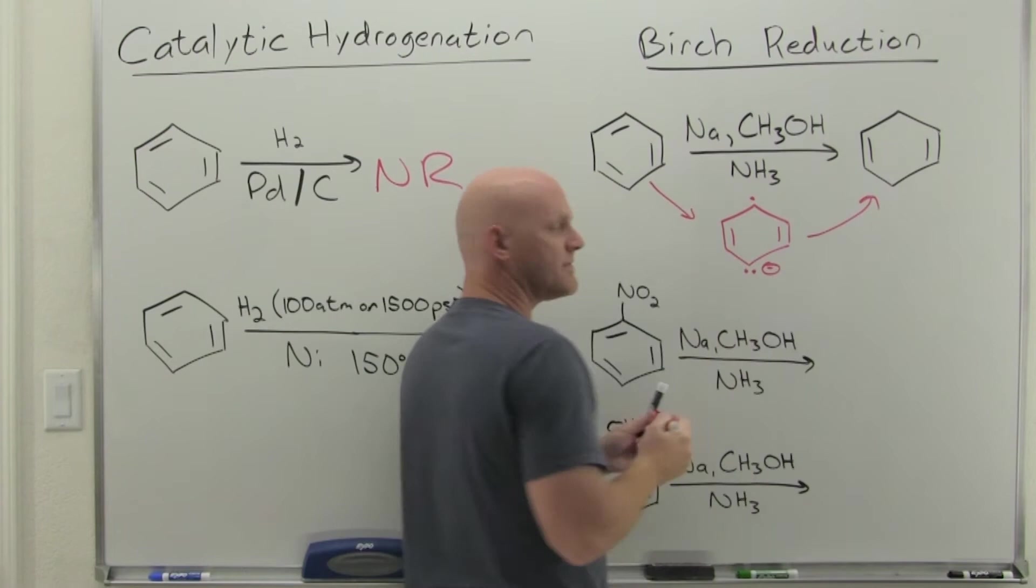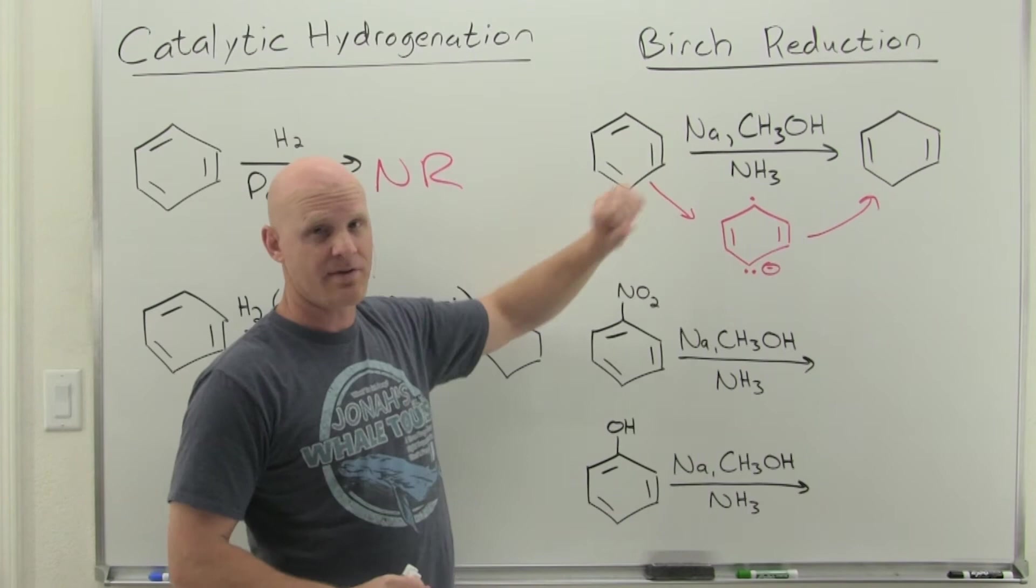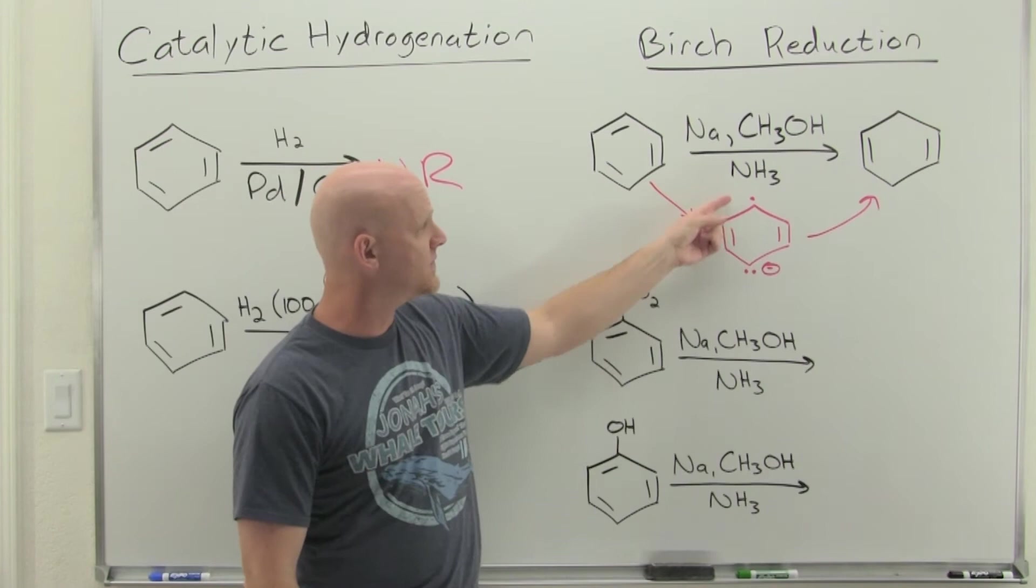So if we take what this looks like, we've got a radical anion intermediate along the way here. And the mechanism itself is not the most important thing. Most of you aren't going to be on the hook for any sort of mechanism, even if this reaction is covered in your class, you're probably not going to cover the mechanism. But it is interesting to note this lovely intermediate, this radical anion.